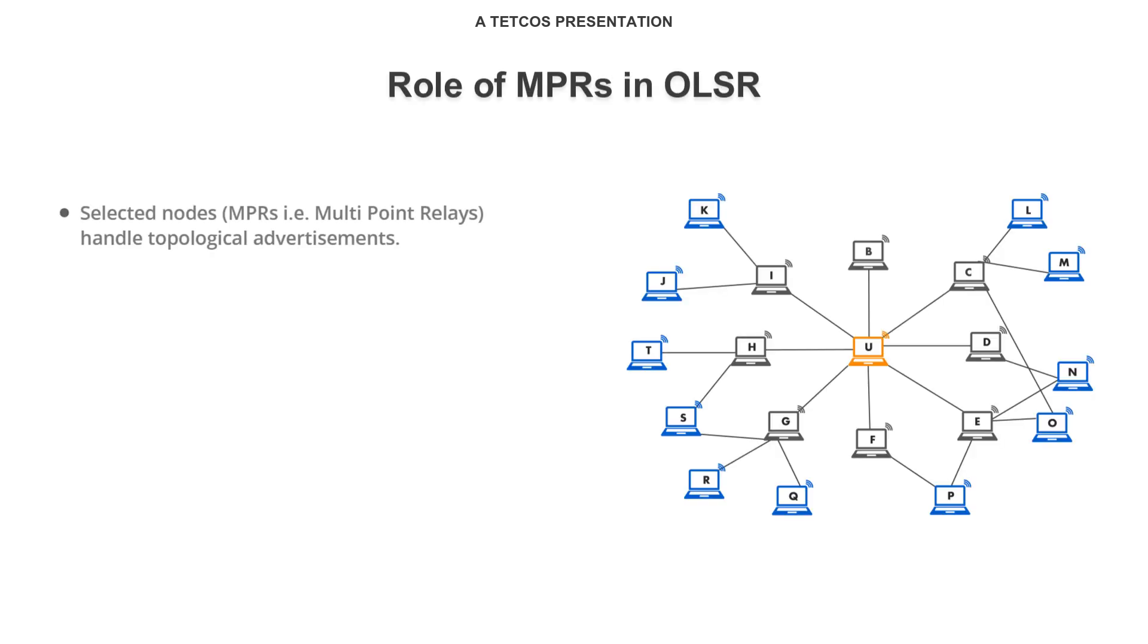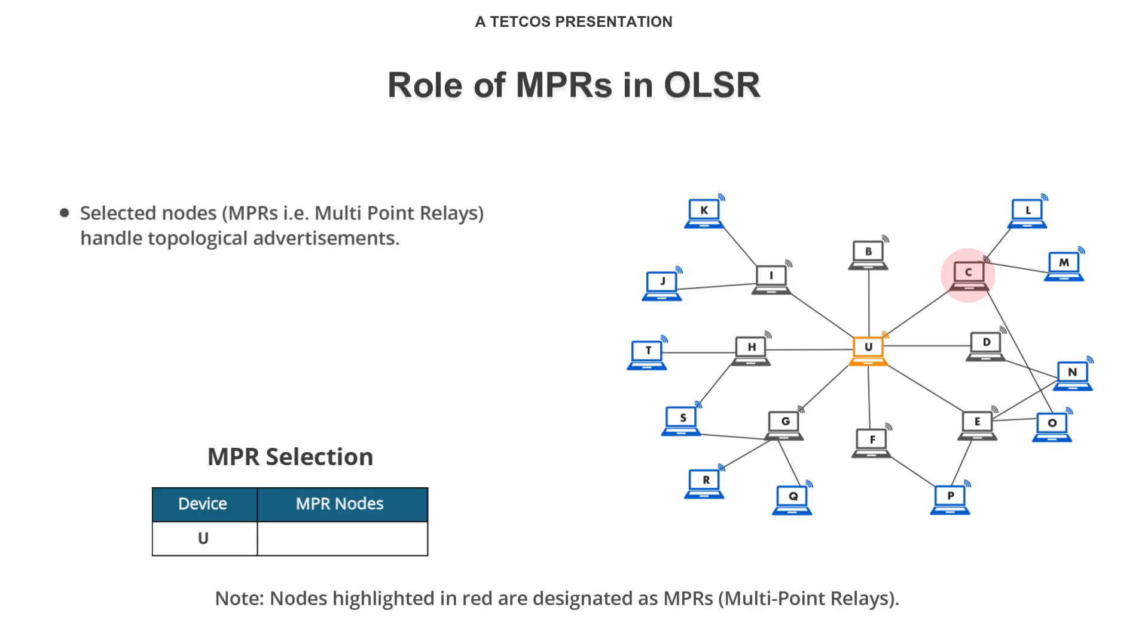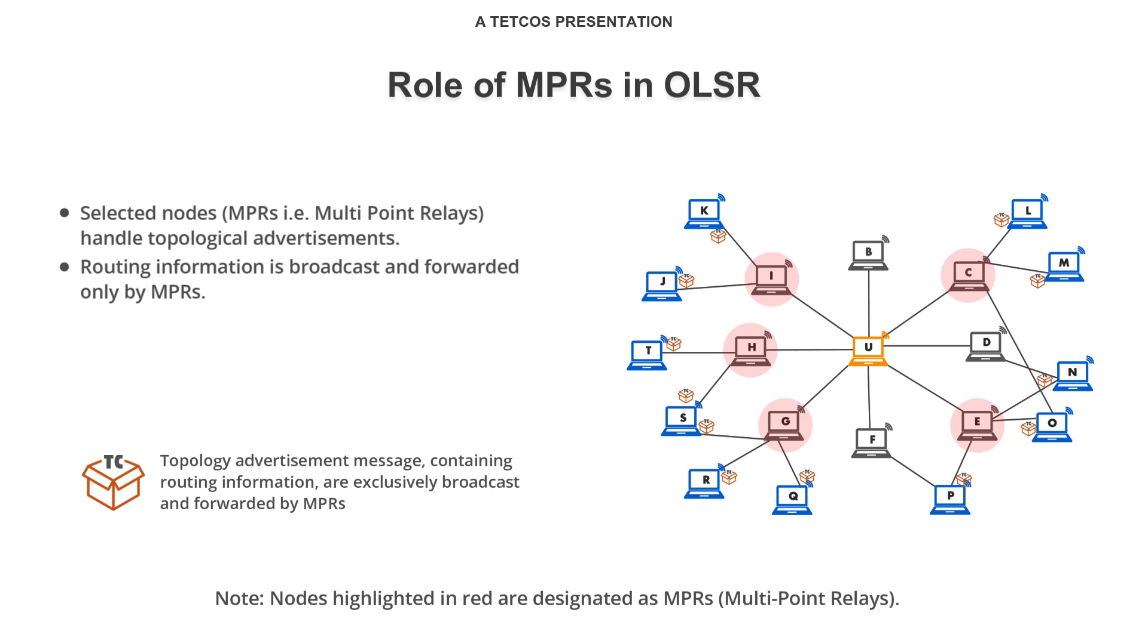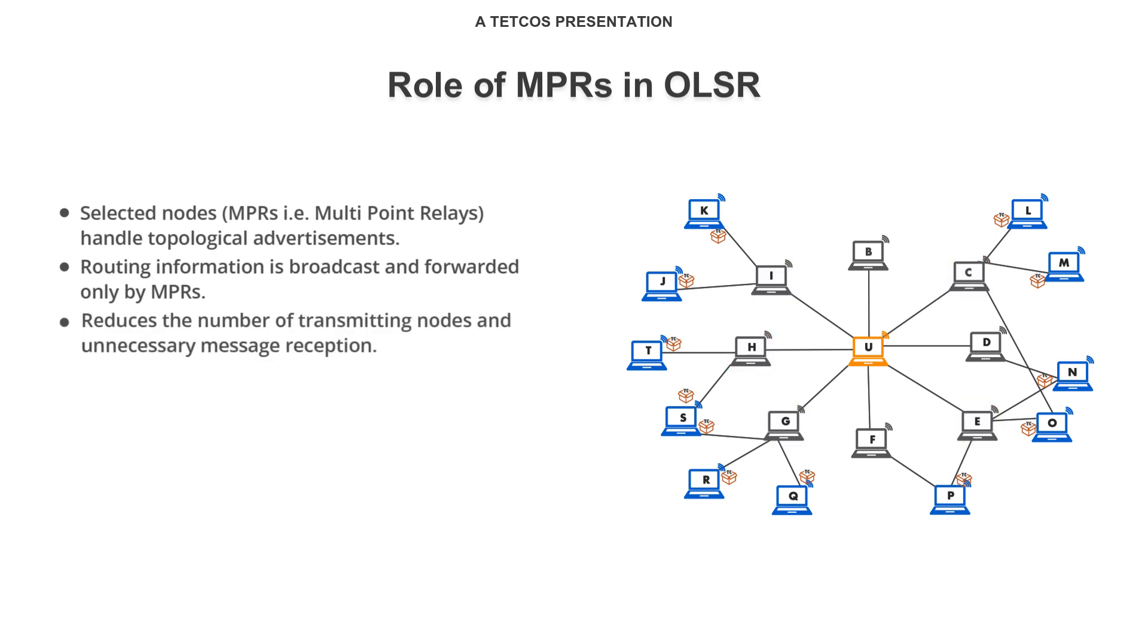In OLSR, only a subset of preselected nodes, called MPRs (multi-point relays), is used to perform topological advertisements. Control messages, such as those containing routing information, are broadcast and forwarded only by MPRs. This reduces the number of transmitter nodes, minimizes overhead, and avoids unnecessary reception of messages by nodes. This approach also mitigates the well-known broadcast storm problem caused by excessive broadcasting.